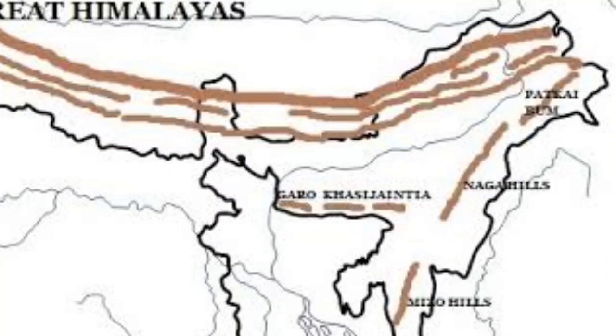To the east of the country lie the Purvanchal Mountains, which consist of the Patkai Range in Arunachal Pradesh, Naga Hills in Nagaland, and Mizo Hills in Mizoram. Garo Hills, Khasi Hills, and Jaintia Hills in Meghalaya are also part of the Purvanchal Mountains. These mountain ranges are extensions of the northern mountain system, which bends sharply south of the Dihang River and spreads along the eastern boundary of India with Myanmar.